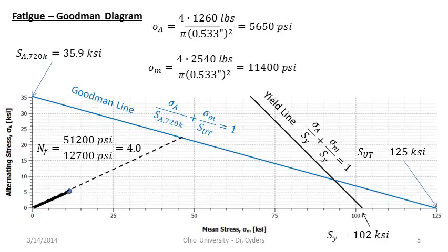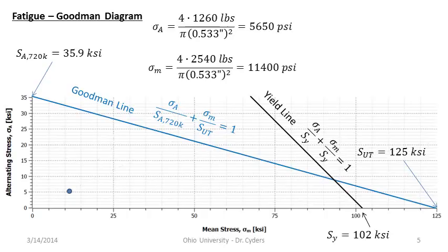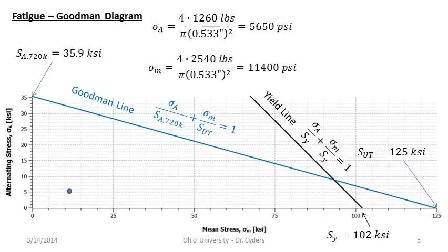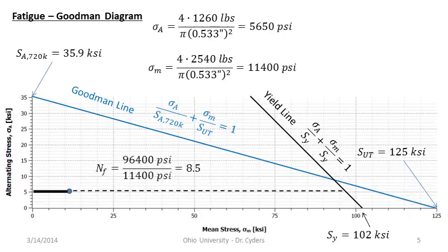You have to consider what is governing the design. Is there variability in the mean stress? Or maybe I know the alternating stress almost perfectly — easy to predict — but the mean stress is uncertain. For example, a bolt tightened with a torque wrench where the pretension isn't precisely known, but the external loads on the joint are well-characterized. In that case, I'd account for variability in the horizontal direction. Drawing the envelope horizontally and measuring to the yield line gives a factor of safety of 8.5.